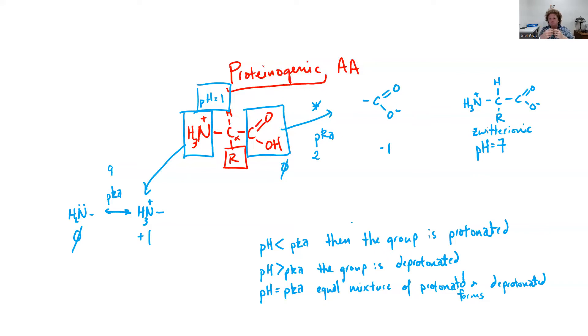This is also known as your zwitterionic form of the molecule, where you have both a positive charge and a negative charge simultaneously present. That's the form with a net charge of zero. Every single amino acid is going to have at least those two groups. There are tons of amino acids that have R groups that are protonated that will have a negative charge and those that will have a positive charge, and some that are basically neutral. But every single proteinogenic amino acid follows this general process.